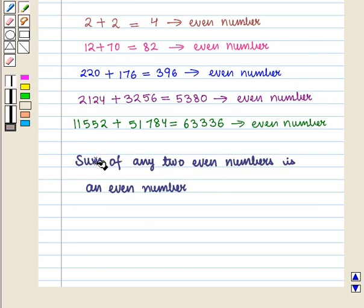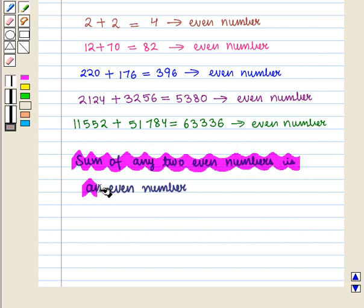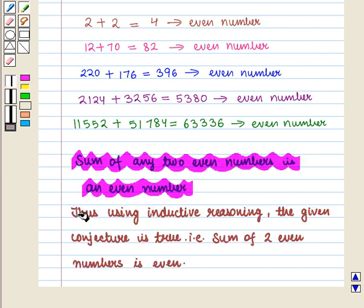So we observe that sum of any two even numbers is an even number. Thus, using inductive reasoning, the given conjecture is true.